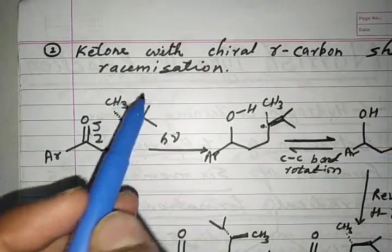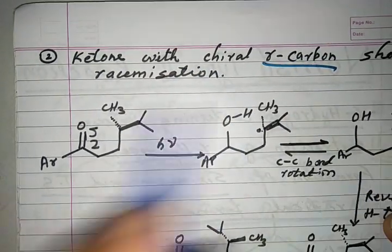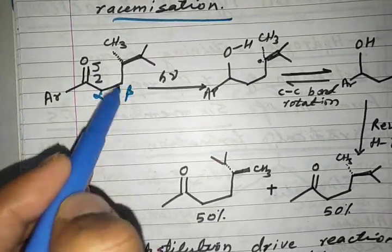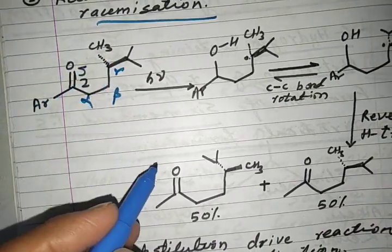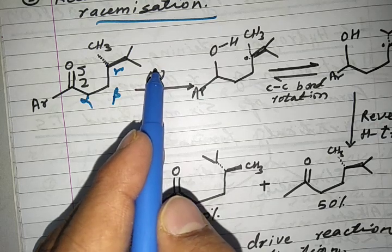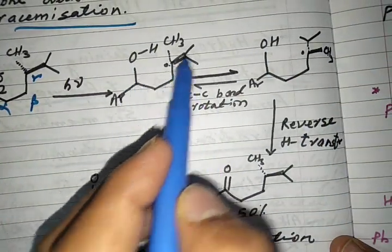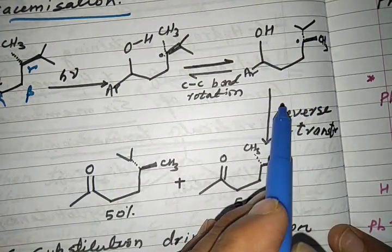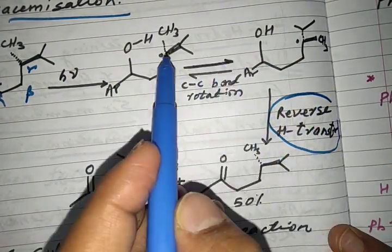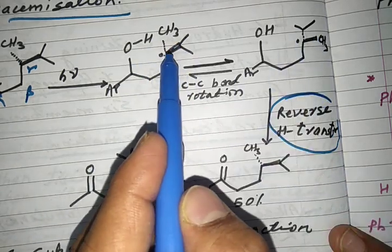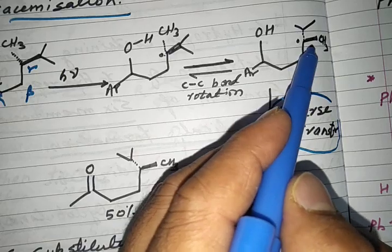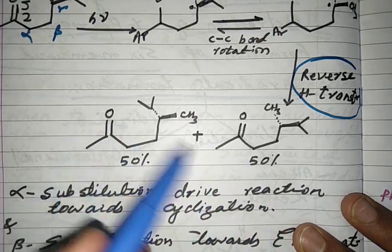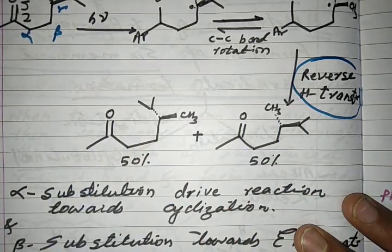Another important feature of the Norrish Type 2 reaction is that if the ketone has a chiral gamma carbon, it shows racemization. When reacted with UV/visible light, reverse hydrogen transfer occurs, bond rotation takes place, and the group that was above the plane goes to below the plane. Then reverse hydrogen abstraction takes place, giving a 50:50 mixture of both chiral compounds — a racemic mixture.